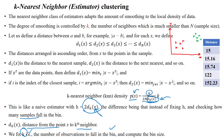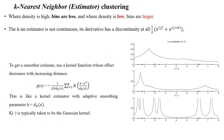By identifying k — the number of neighbors — we can determine how many neighbors are in a particular bin, and therefore know the bin size. Based on the bin size, we can identify the density of the given data samples.